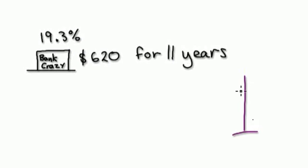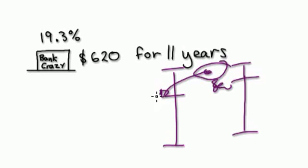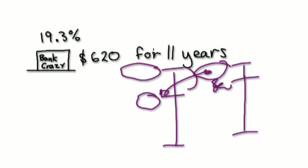Remember, your diagram will look something like this. This will be your original. And then after one year, you're going to have this much. And then in the second year, this thing here will be your new 100%, and then you're going to get another 19.3% interest. So this will be the amount after year 2, and so on.